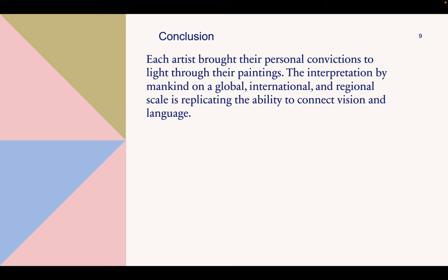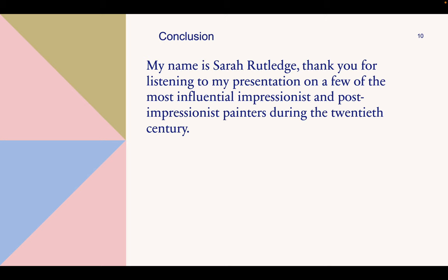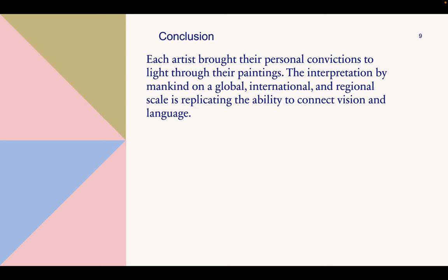In conclusion, each artist that I have discussed brought their own personal convictions to light through their paintings. The interpretation by mankind on a global, international, and regional scale is replicating the ability to connect vision and language. Claude Monet influenced the world in many ways. Impressionism got its name from the title of his most recognized painting, "Impression, Sunrise." His impact on modern art is tremendous — the colors, the attitude, and the uniqueness of his paintings are amazing.